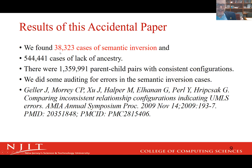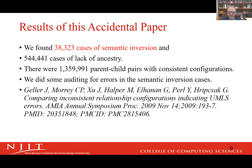I wrote the programs, and this was an accidental paper — a lot of my best papers are actually written because some accident happened. We found 38,000 cases of semantic inversion and half a million cases of lack of ancestry. To put this into perspective: there were 1.3 million consistent cases where things were exactly as they should be. Our team looked at some of the cases of semantic inversion and said, 'yeah, this is definitely wrong,' or 'this can be explained away.'